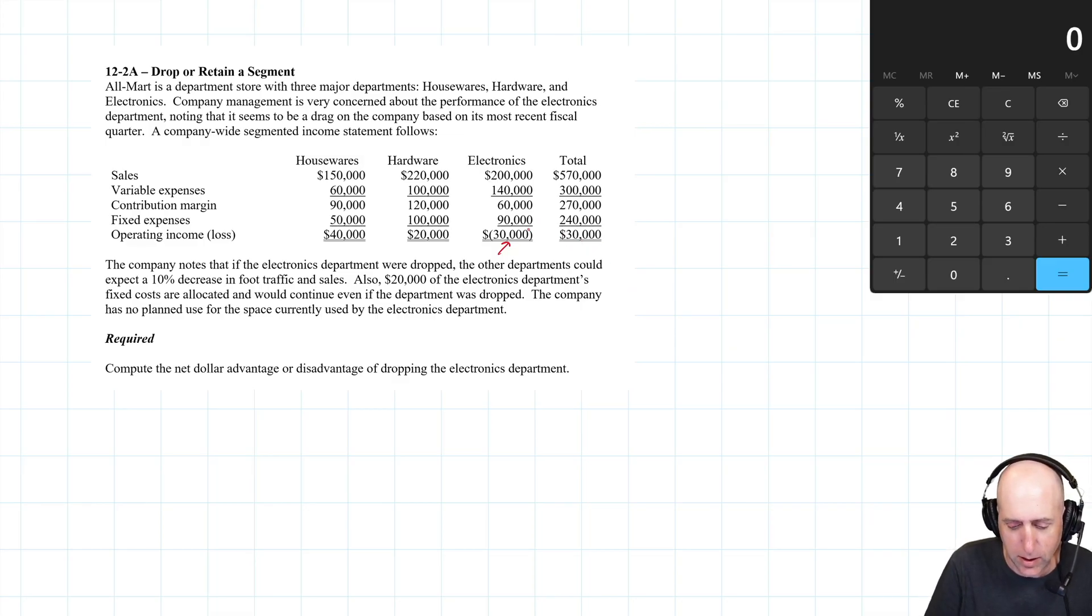If you got rid of electronics, you'd go, okay, well if I get rid of that, I got 40 and 20, I'm making 60, right? I'm doubling my profits. So you could understand how it would be cause for concern if you were running this company.